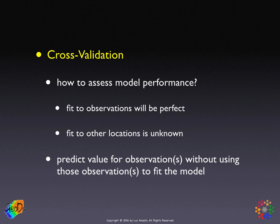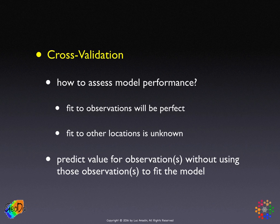This is called cross-validation. It's a very powerful technique, very common in machine learning and modern data mining approaches. The principle is simple: you split the data. One part you use to fit the model, and the other part you use to assess the quality of the model. One reason for doing this is to avoid what is called overfitting — where the model fits the observed data very well, but that doesn't mean it will predict unobserved data well. To correct for that, we have a training data set and a test data set.